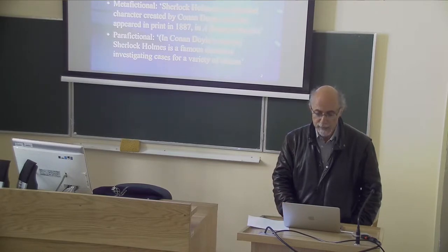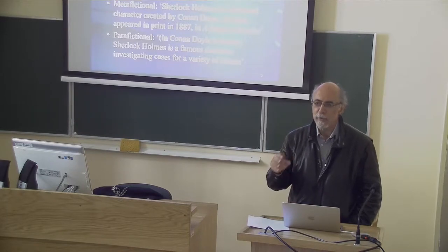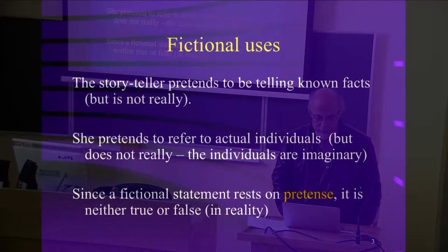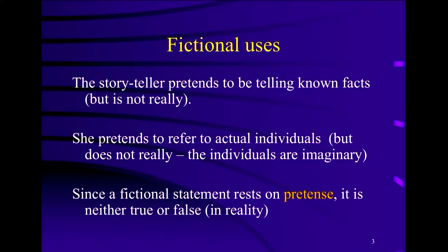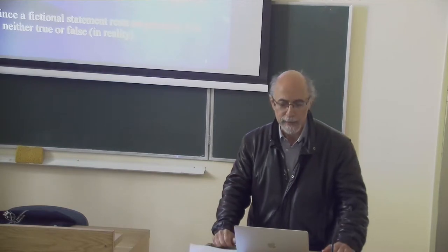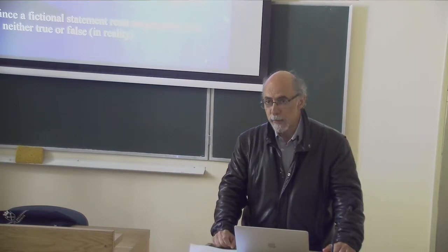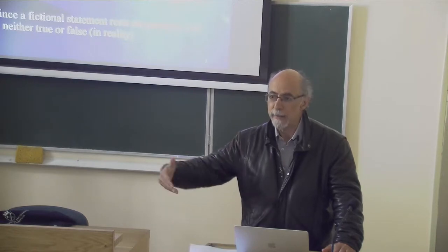What I'm going to say is very tentative. The three types of uses I call fictional, metafictional, and parafictional. The fictional uses — like this example, suppose that you read a Sherlock Holmes story and find a sentence: 'Sherlock Holmes shook his head and lit his pipe.' That's the sort of use I have in mind. In the fiction itself, you find sentences that contain the name of a fictional character. How should we understand the use of proper names in fiction for talking about persons who don't exist? There is a view according to which fiction is a sort of pretense, an elaborate pretense, a game of make-believe — and that's the view I endorse. So the storyteller pretends to be telling known facts about some actual individual.